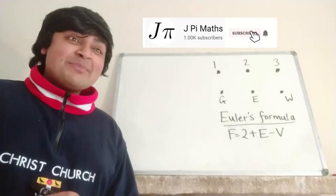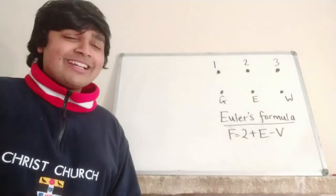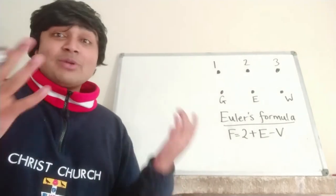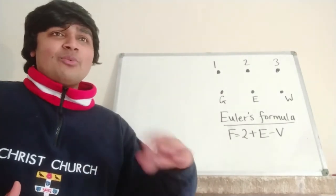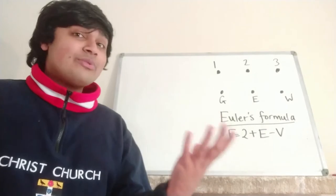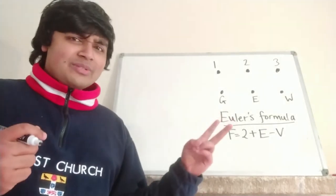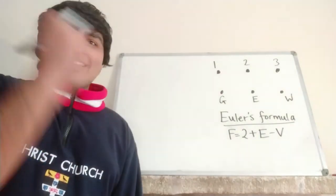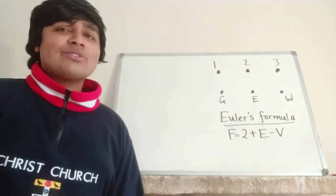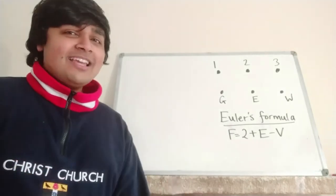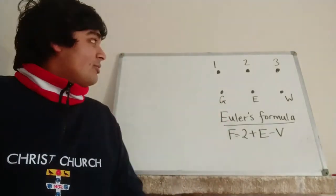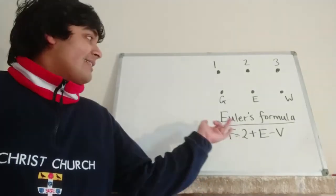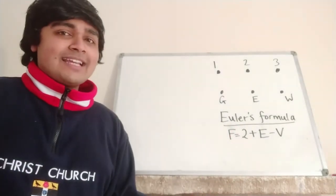So the solution to this problem, sadly, is no. You cannot connect all of the houses up to each of the utilities. If you had a play around with it, you might have found a way to connect two of the houses up to all three utilities, and then the final house up to just two of the utilities. But if you try and do that third one, that third house to that final utility, you're going to have to cross a wire somehow. But today I'm going to prove it. So what I'm going to be doing is essentially converting this problem into a graph theory problem, and then using Euler's formula, which I'll explain in just a second.